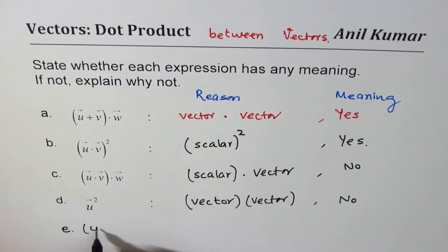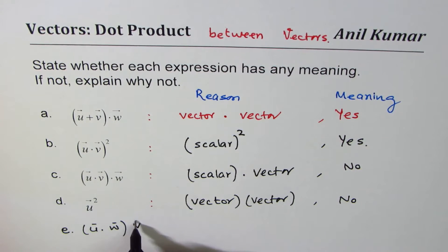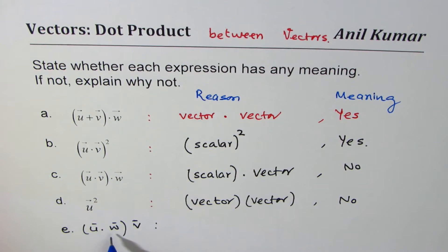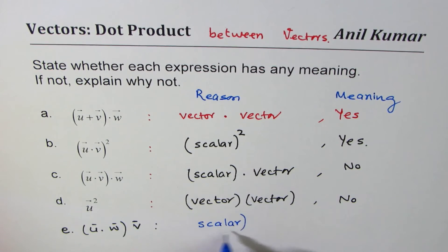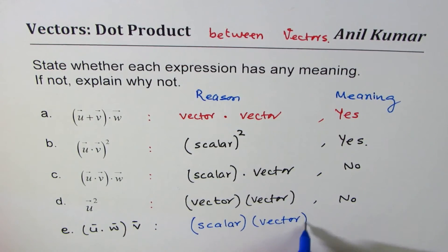Let's have a dot product of two vectors, and we'll multiply this by another vector. Now does this have a meaning or not? Think about it. And then write down your answer. Here is my solution. The dot product is scalar, right? So we have scalar times vector.